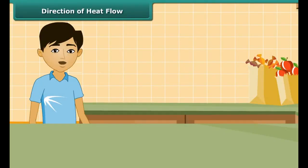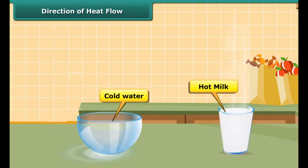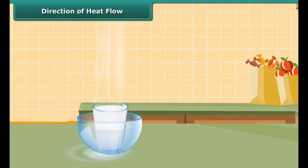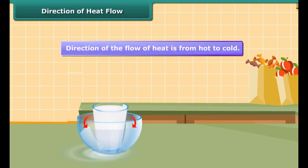Let us perform an activity to understand the concept of direction of heat flow. We place a glass of hot milk in a dish with cold water. After some time, the milk gets cooled and the water gets warm, and both milk and water come to lie at the same temperature. The direction of the flow of heat is from hot to cold.